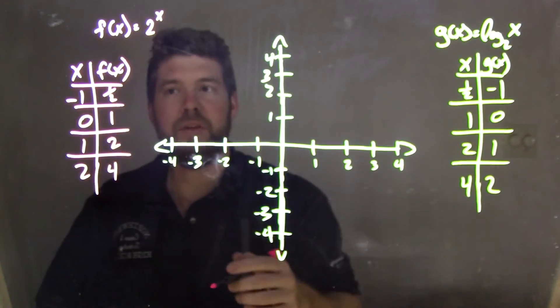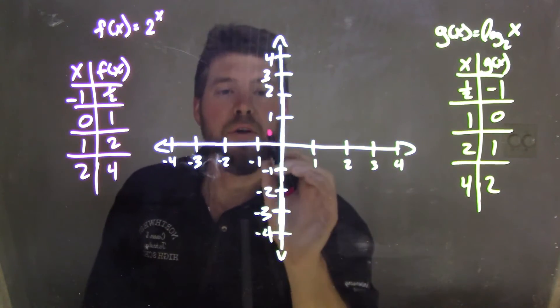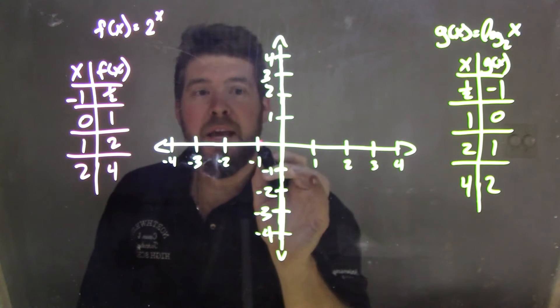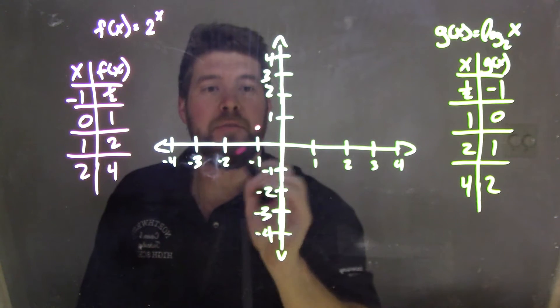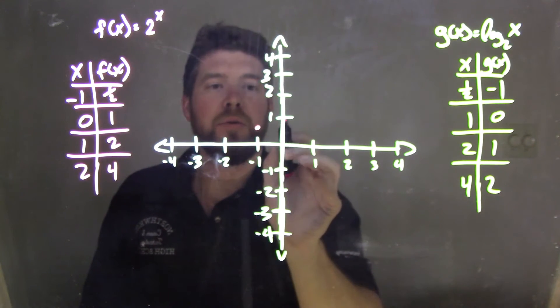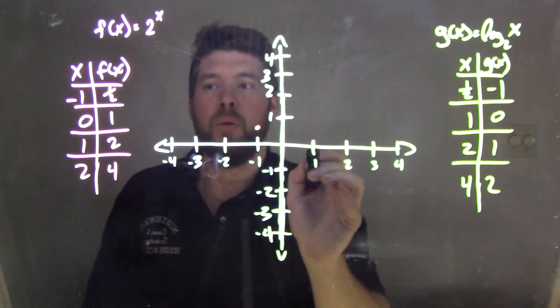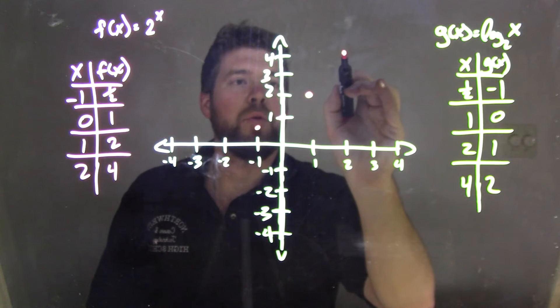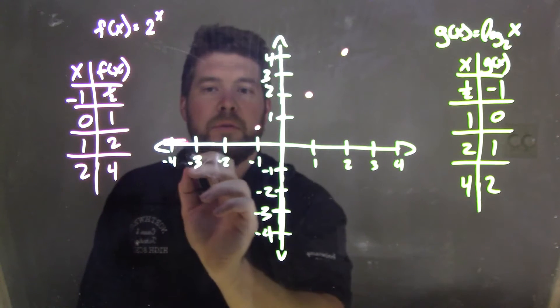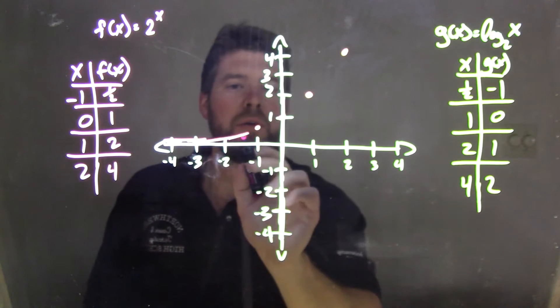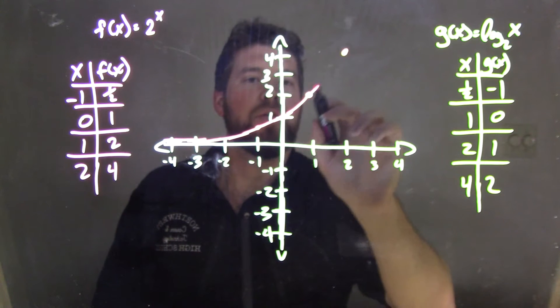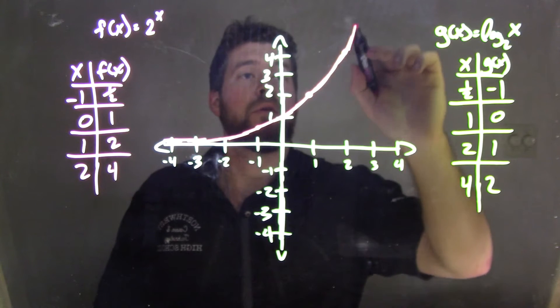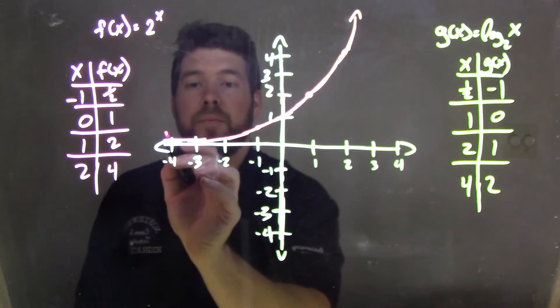So let's go graph this and see the relationship between these two. So here with f(x), which is 2^x, when x is -1, we have 1/2 going on here. At 0, we have 1. At 1, we have 2. And at 2, we have 4. So this graph goes up here. It's increasing. Not the best graph, but it's not the worst graph.